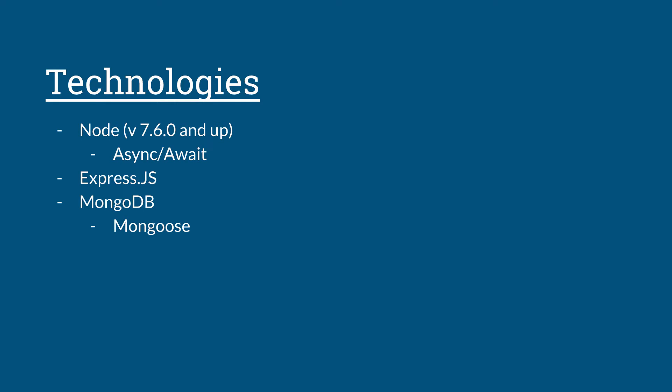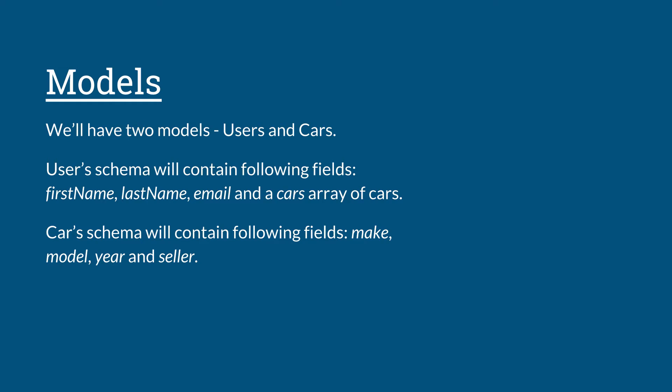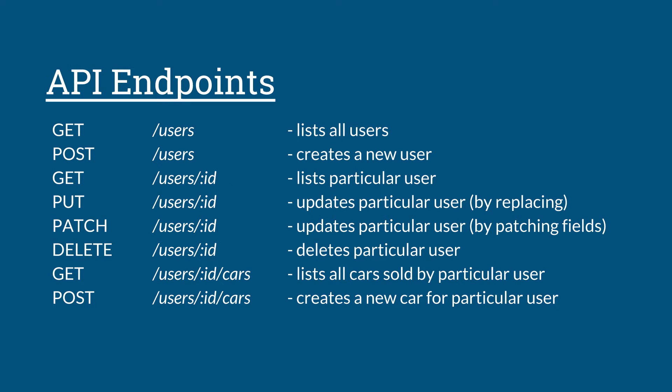We won't be communicating with MongoDB directly; instead we will be using Mongoose to have a much nicer time writing MongoDB queries. For our models, we will have two: a User and a Car. The User schema will contain first name, last name, email, and a special field called 'cars', which will be an array of cars — representing the cars being sold by that particular user. The Car model will have a schema containing make, model, year, and seller.